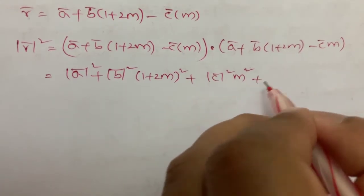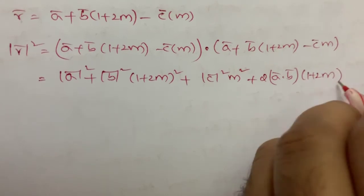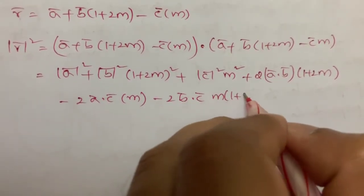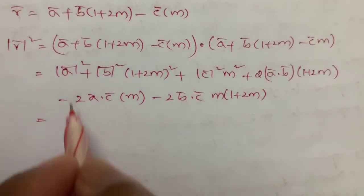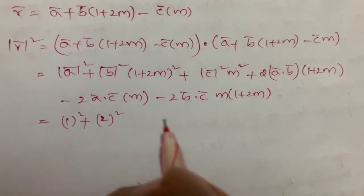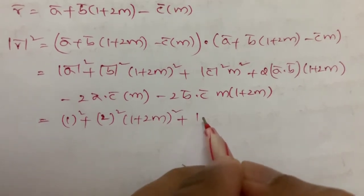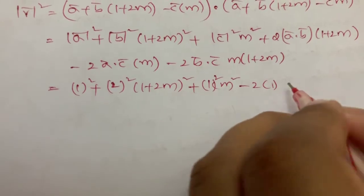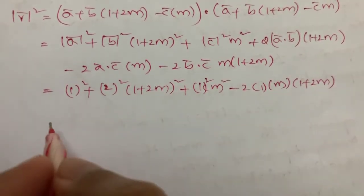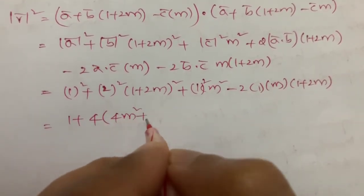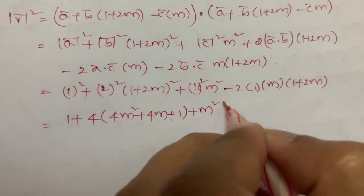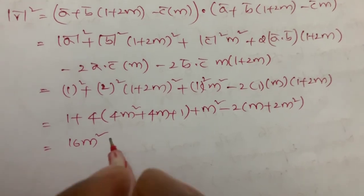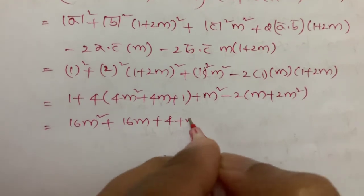Next, adding the cross terms: plus 2(a dot b)(1+2m) minus 2(a dot c)·m minus 2(b dot c)·m·(1+2m). Substituting: magnitude of a is 1, magnitude of b is 2, so 4 times (1+2m)², magnitude of c is 1, so m². a dot b is 0, a dot c is 0, b dot c is 1. So minus 2 times m times (1+2m). Expanding: 1 + 4(4m²+4m+1) + m² minus 2(m + 2m²), which gives 16m² + 16m + 4 + m².